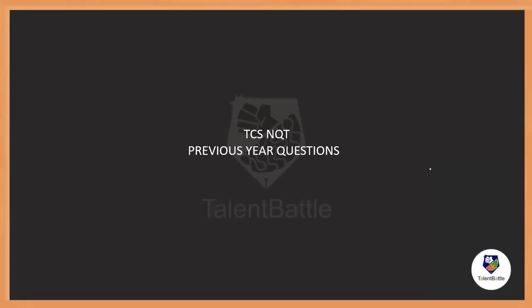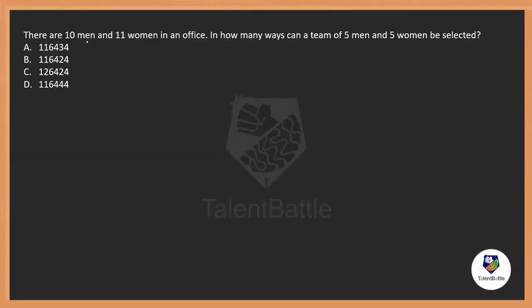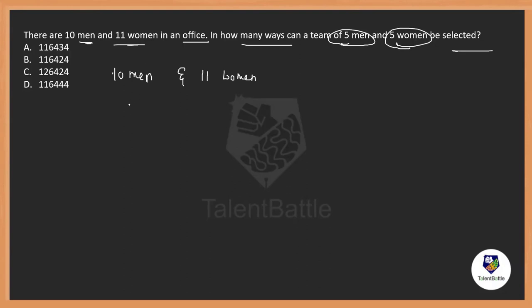Let's start now. There are 10 men and 11 women in an office. In how many ways can a team of five men and five women be selected? This is a direct selection basic question. There are 10 men and 11 women, and we are supposed to choose five men and five women. This is a fill-in-the-blank question — you just need to type the answer.